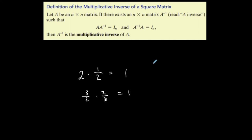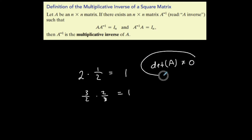We'll talk more about determinants, but in order for a matrix to have an inverse, the determinant of that matrix must not be equal to zero. We'll talk about this soon, but I'm going to put it on these notes so that you have it there.